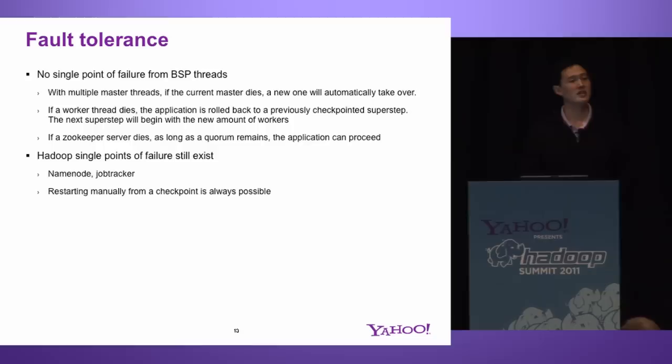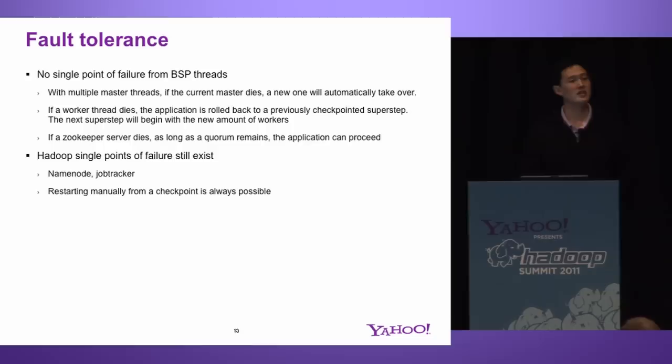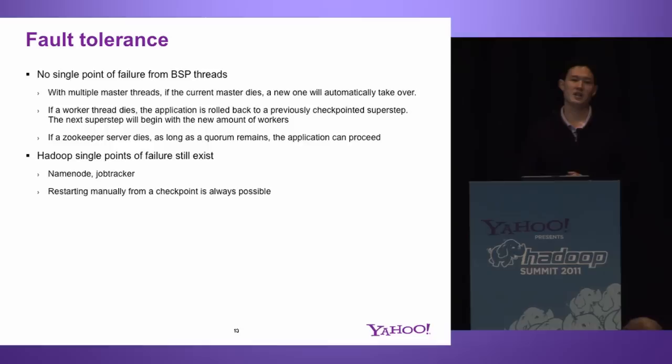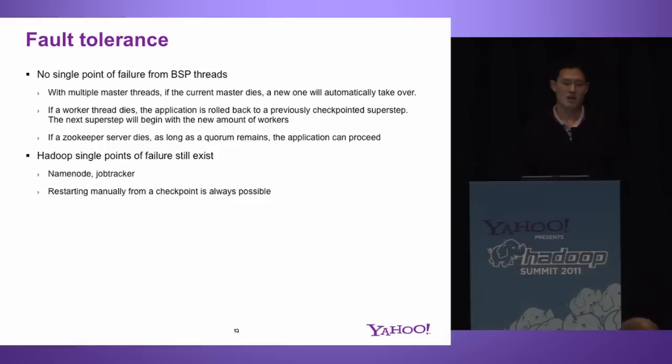Fault tolerance: we don't have any single point of failure in our system from the BSP point of view. If a master goes down, we have backup or standby masters ready to take on the active role. If a worker thread dies, we can go from previously checkpointed super steps and automatically restart your application, so there's nothing for an operator to do. If a Zookeeper server dies, as long as you've maintained a quorum, your application will be able to proceed. There are still a couple of single points of failure inherent in Hadoop — the name node and the job tracker — but as we saw in previous talks, that's being worked on actively, and once fixed, there will be no single point of failure in our application.